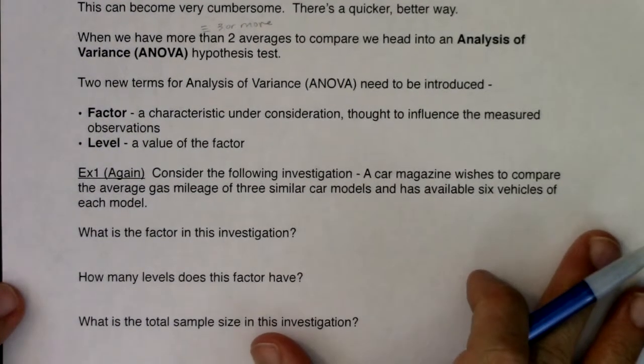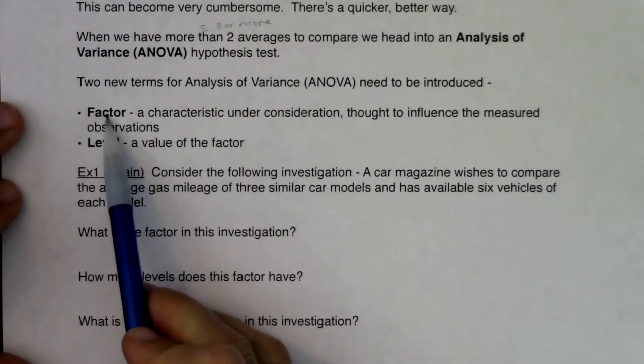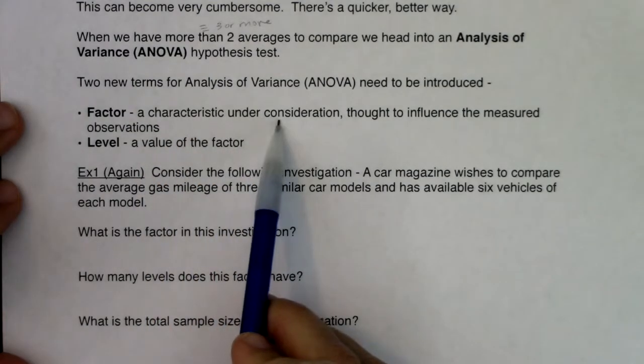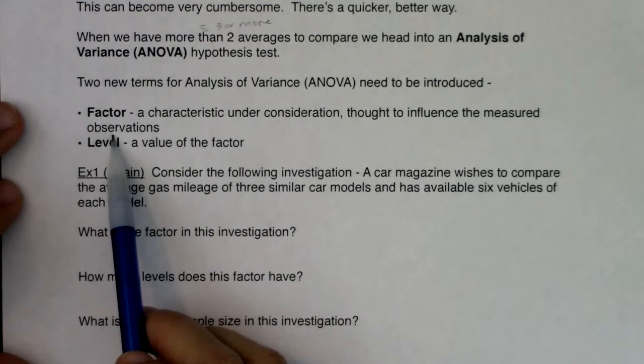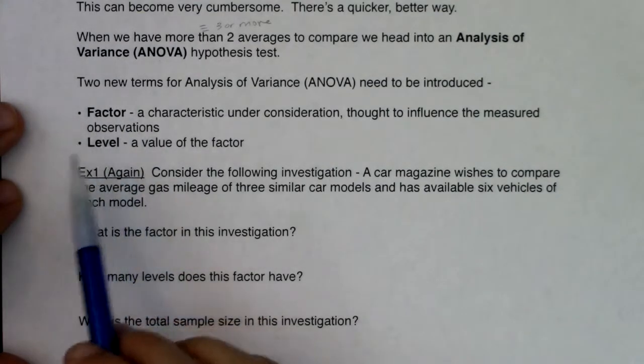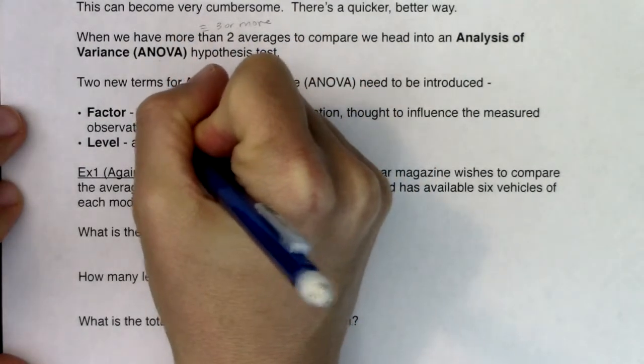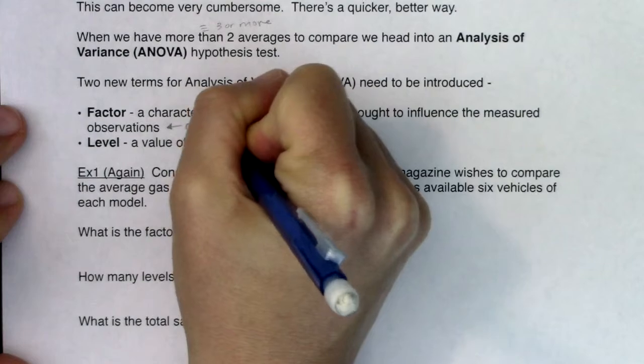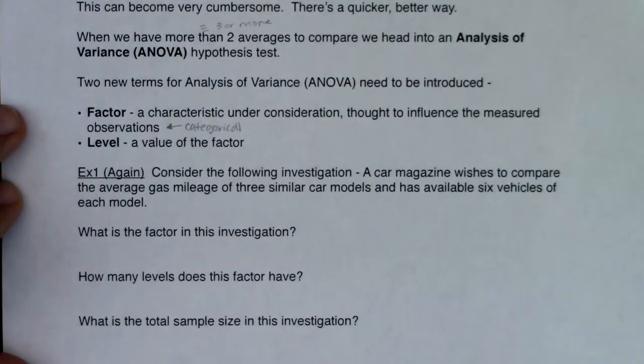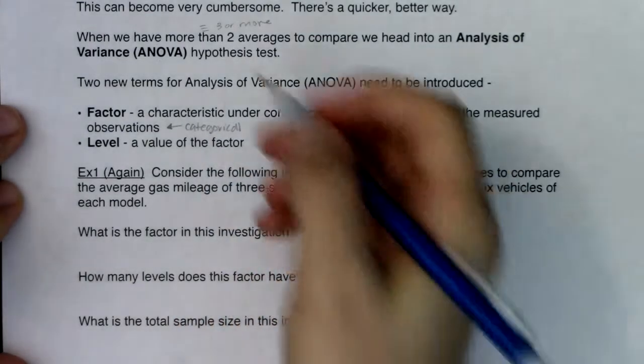And with an ANOVA hypothesis test is going to come a couple of new vocabulary terms. So let's introduce those, get those under our belt. The two new vocabulary terms, we're going to pick up factor and level. So factor is a characteristic under consideration thought to influence the measured observations. So this seems a little vague right now. The factor is categorical in nature. So this thing is categorical in nature, and I don't mean like out in the world of nature, I just mean in general, and it has to do with how the different observations are grouped.